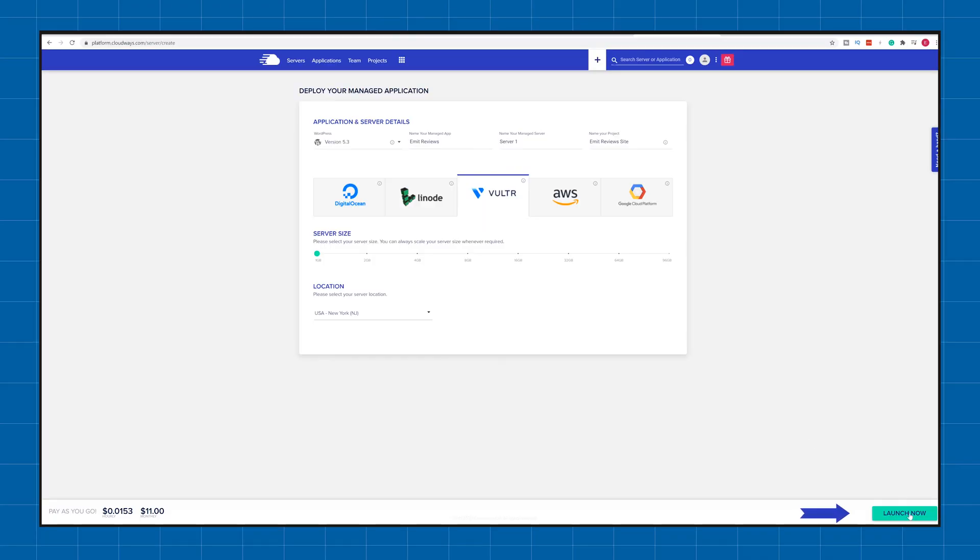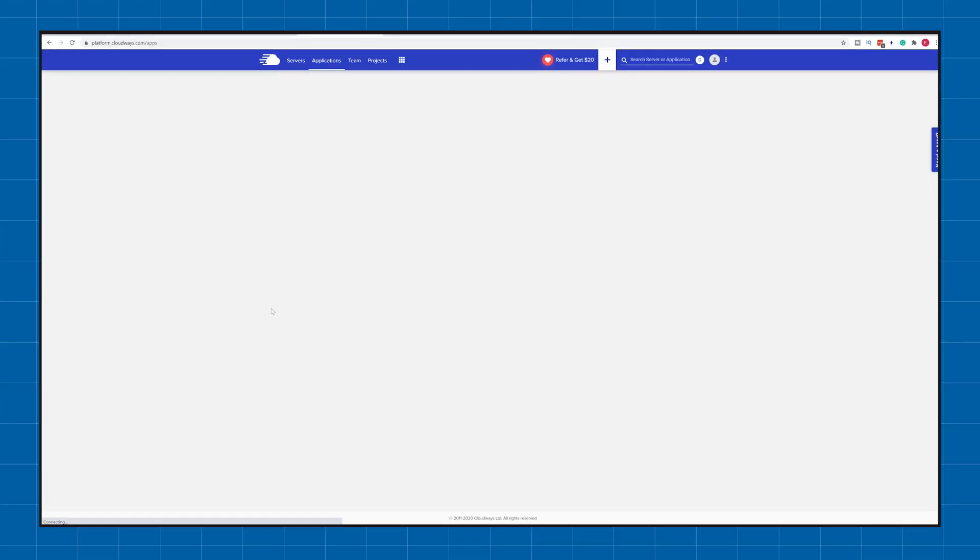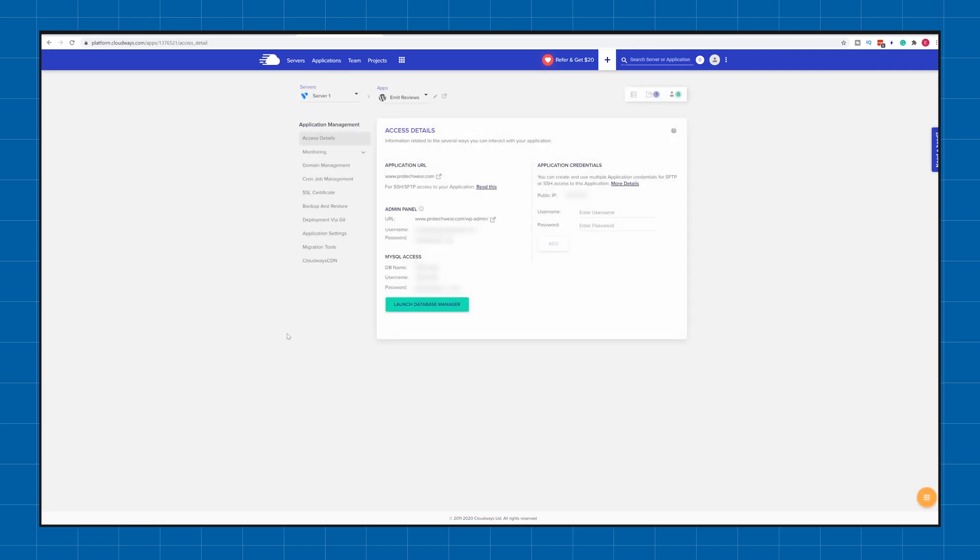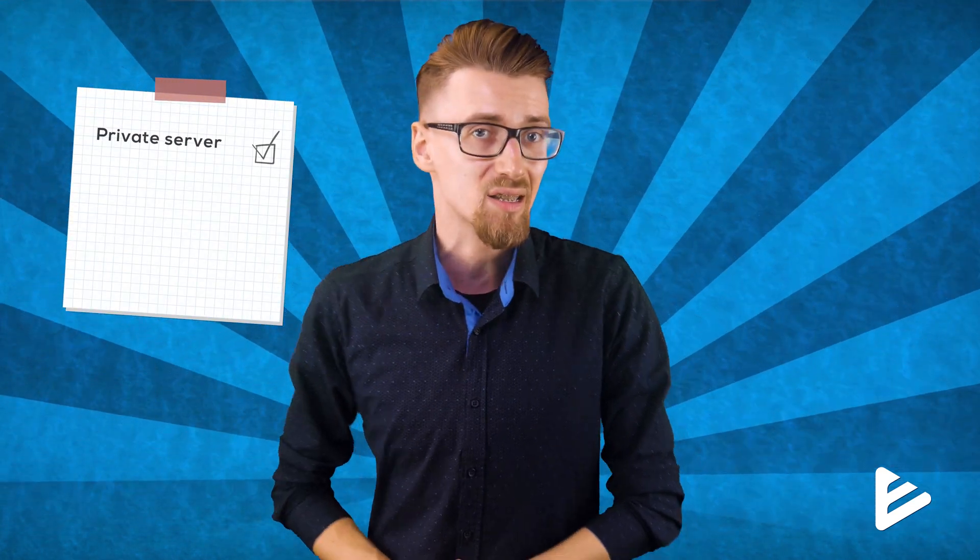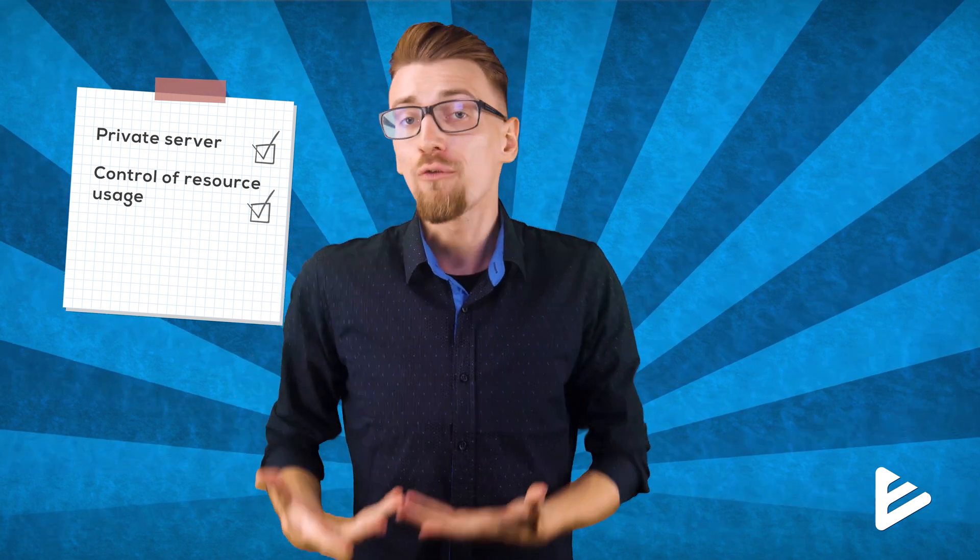And remember to always choose the server location that's going to be closest to your users not you. Because it's them who's actually gonna be using your website. And by reducing the physical location between the server and the users you actually make your website faster for that specific user. Once you click launch now you will have your server automatically configured for you in around 10 minutes. After it's complete your website will be already online and you can work on the design or content using WordPress. Using Cloudways you'll get your own private server without all of the complicated setup and you're in control of resource usage.